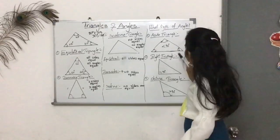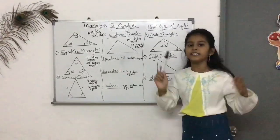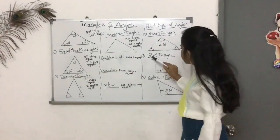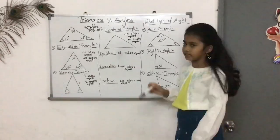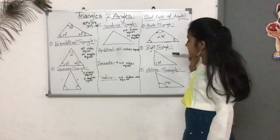This, all the angles are less than 90 degrees. And number two, this is the right triangle. This has exact 90 degrees.